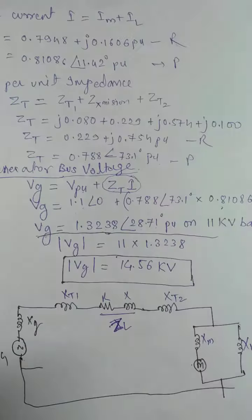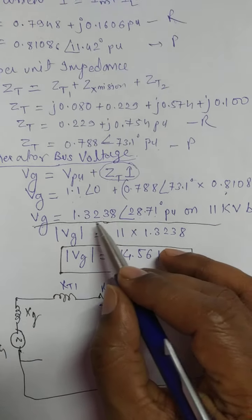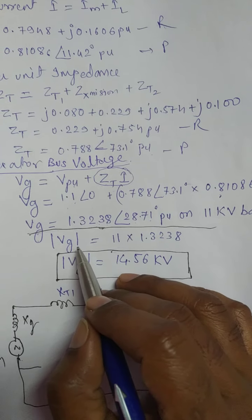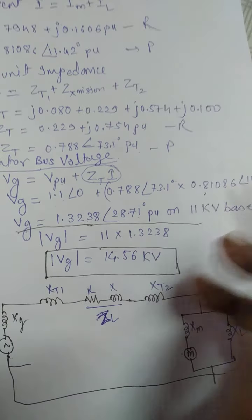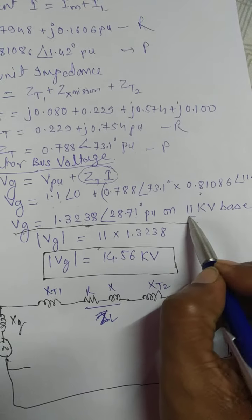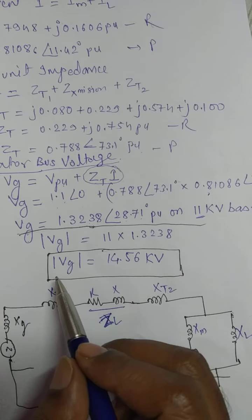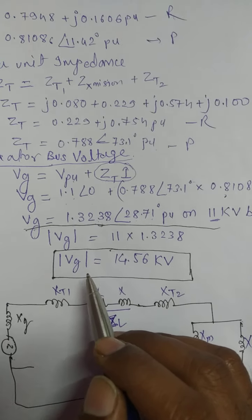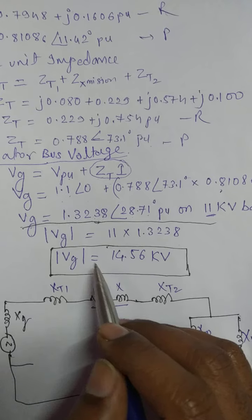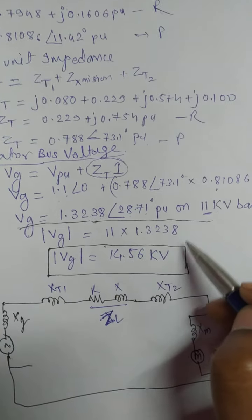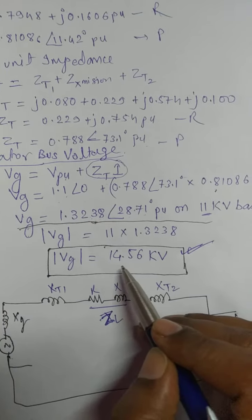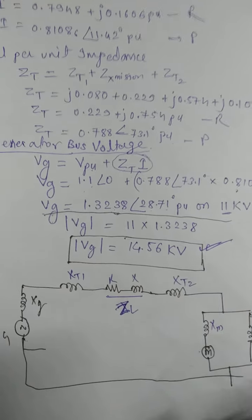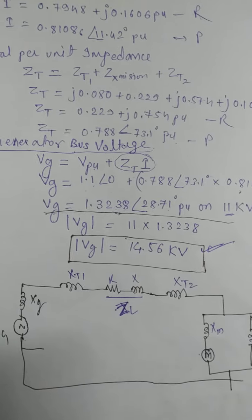The magnitude of VG is 1.32 per unit. To get the actual generator bus voltage, multiply this per-unit value by the base voltage: 11 kV times 1.32. The final answer for the generator bus voltage is 14.56 kV.